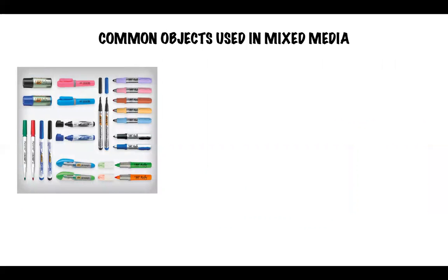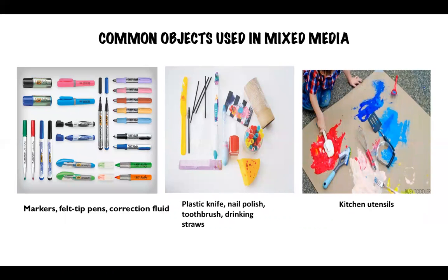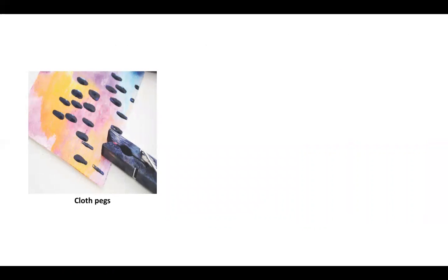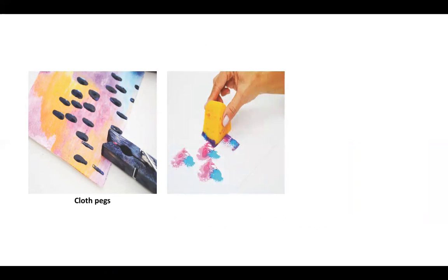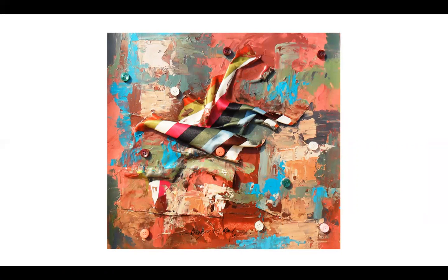Common objects used in mixed media art are markers, felt tip pens, correction fluids, plastic knife, nail polish, toothbrush, drinking straws, kitchen utensils, bags, sponge, and plastic cards.